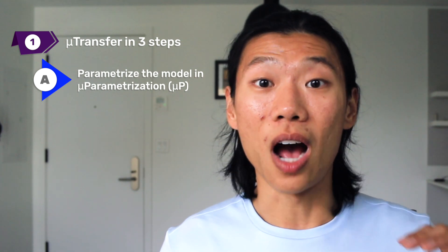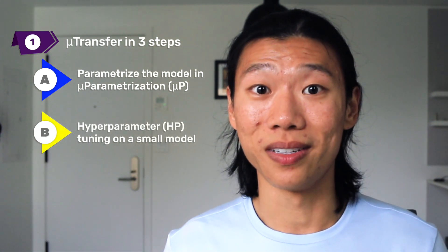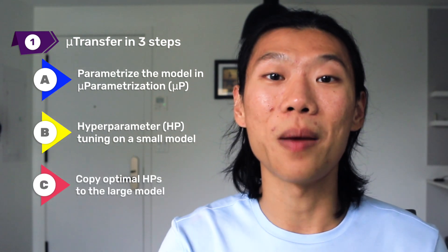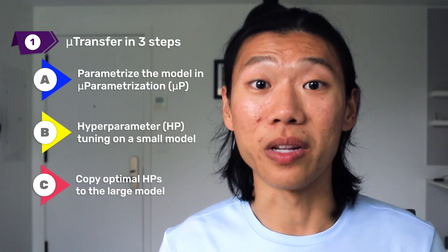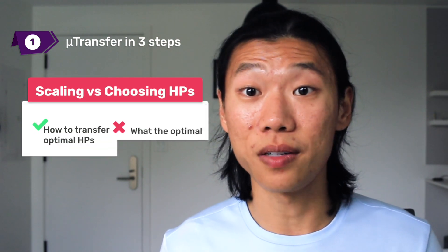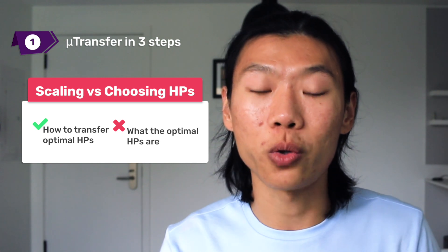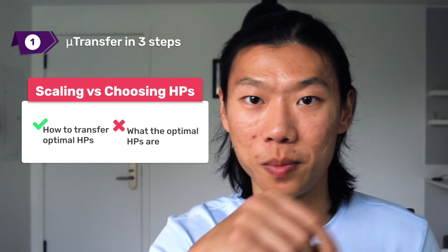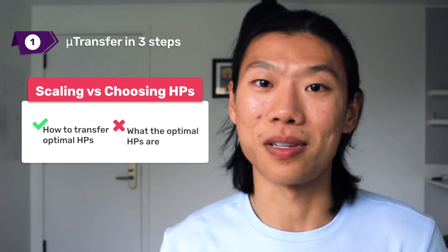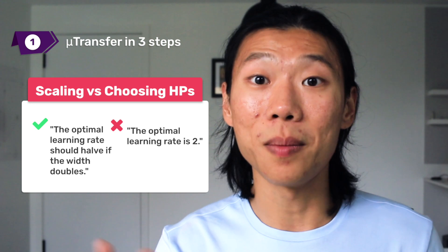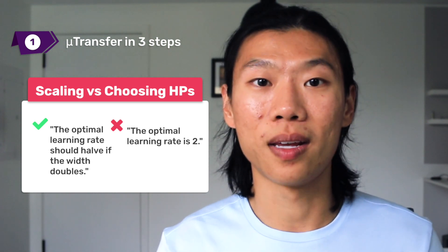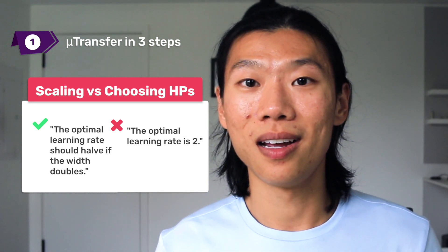In step 2, we optimize the hyperparameters as usual on the small model. Finally, we simply copy the optimal hyperparameters to a bigger version of the network, without needing to retune them. It's important to keep in mind that MuTransfer doesn't tell you what the optimal hyperparameters are for the large model. Instead, it tells you how to transfer optimal hyperparameters from a small model to a large model. For example, instead of saying the optimal learning rate is 2, MuTransfer tells you that for some layers, if you double the width, the optimal learning rate should halve.